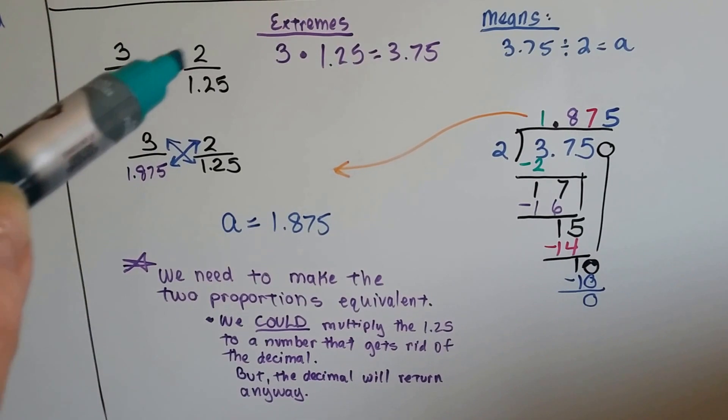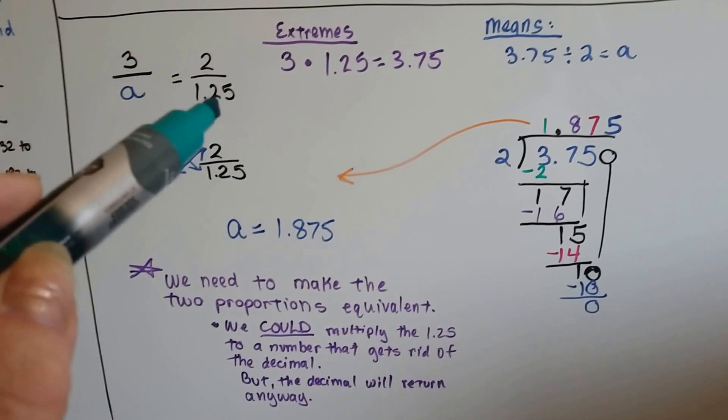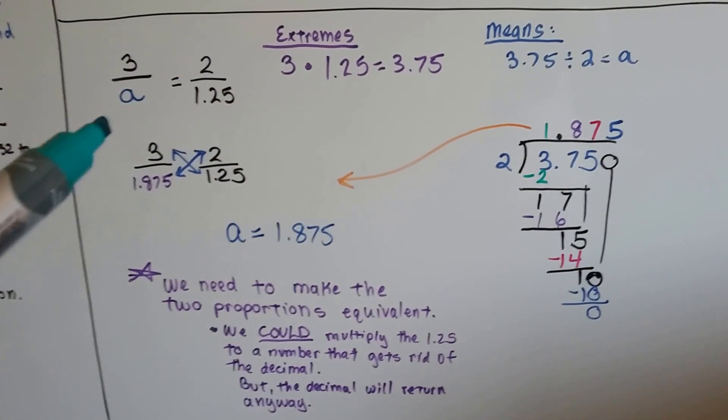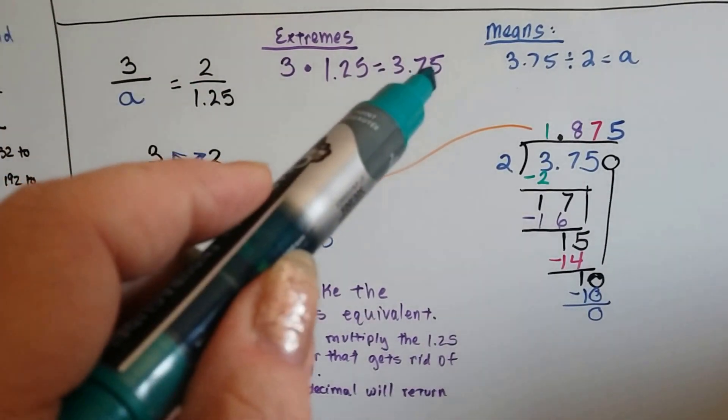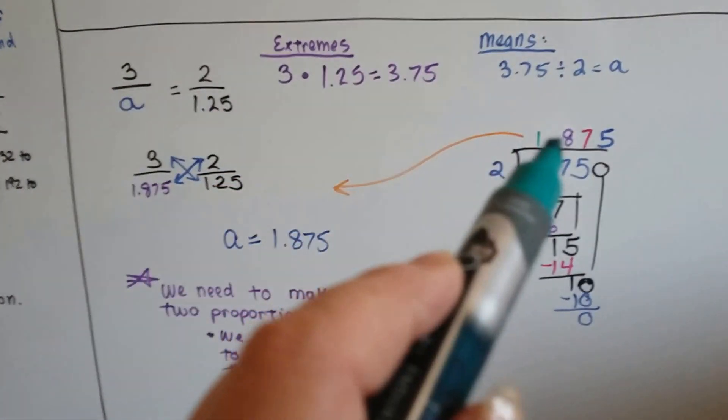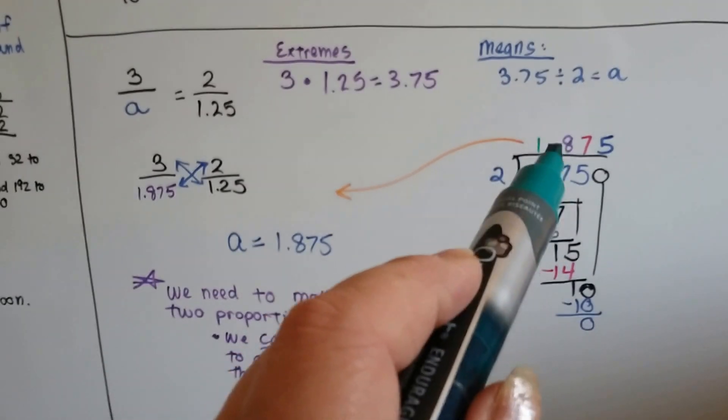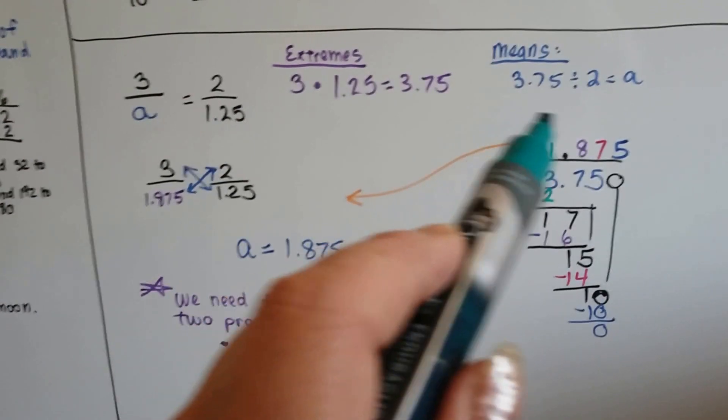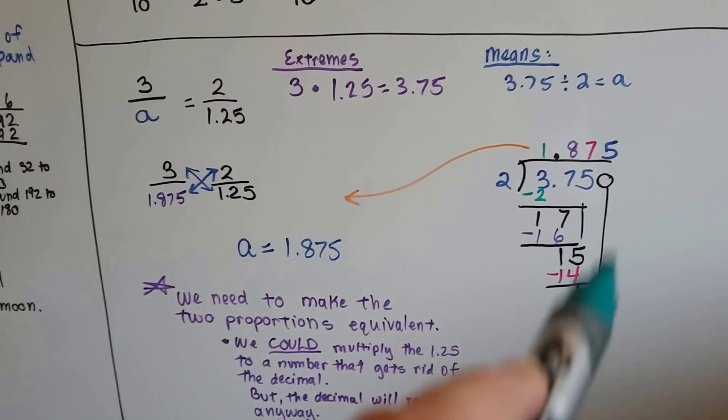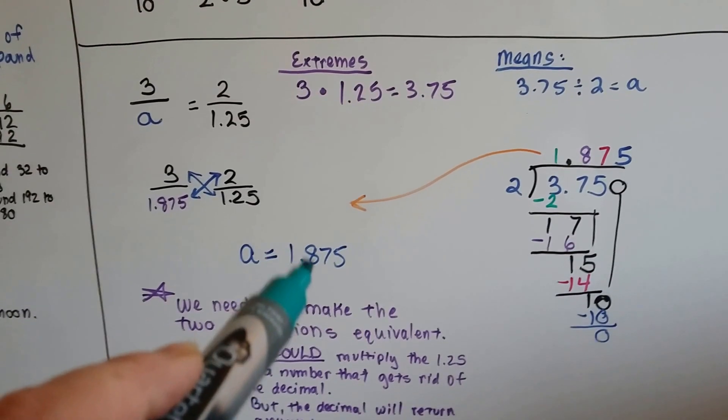If we've got 3 over a is equal to 2 over 1.25, what we can do is multiply the 3 times the 1.25 and get 3.75, and now we just find out 2 times what is 3.75. So we divide the 3.75 by the 2, and after we do our long division, we come up with 1.875. So we know that 2 times 1.875 equals the 3.75. And I had even added a 0 at the end to make it come out with the 5 at the end. So we know that a is equal to 1.875.